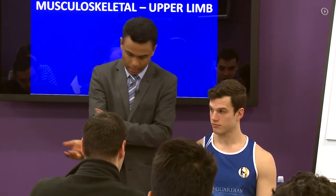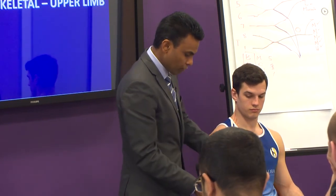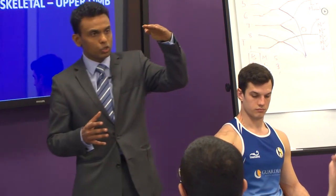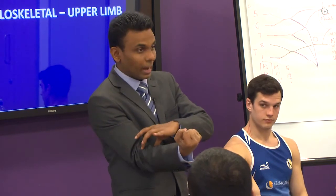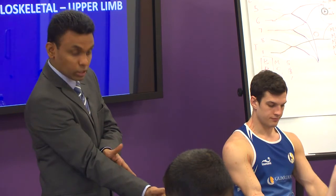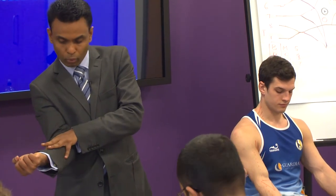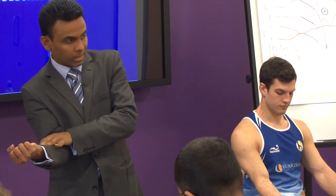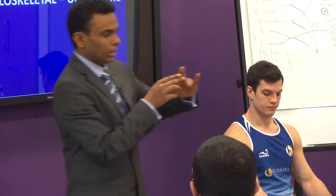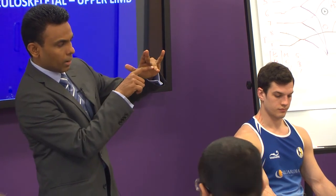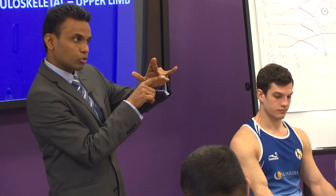There are eight forearm flexor muscles, five superficial and three deep. The five superficial ones are: pronator teres, flexor carpi radialis, palmaris longus, flexor digitorum superficialis, and flexor carpi ulnaris. Note that flexor digitorum superficialis is sometimes classified as an intermediate layer, not strictly superficial — remember that for the exam.